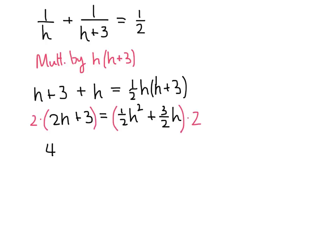Now on the left-hand side, we have 4h plus 6, and on the right-hand side, we have h squared plus 3h. As normal when solving quadratic equations, we want to get everything onto one side. So let's subtract 4h from both sides and subtract 6 from both sides. Subtracting 4h, we get 3h minus 4h, which is minus h, and then subtracting 6, we get minus 6.